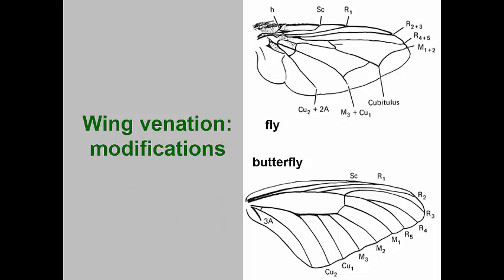If we take a closer look at the front wings of a fly and a butterfly, we can see how the veins have been modified, but the vein names are derived from an original template. In the fly, notice that some veins are joined or lost, while in the butterfly, some veins are branched and retained.